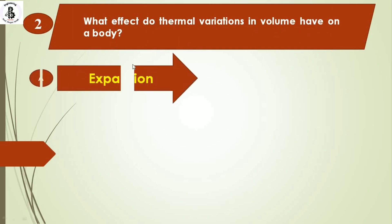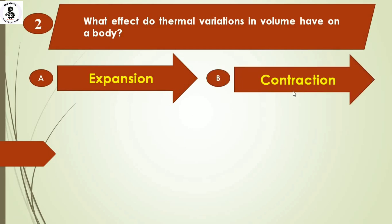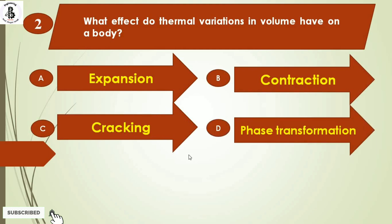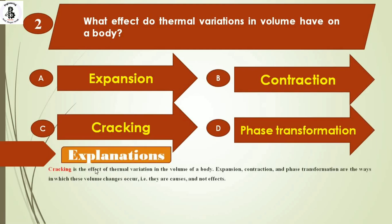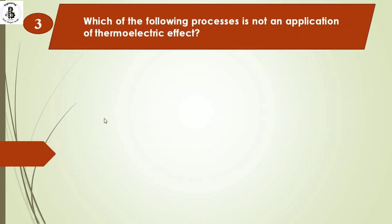The next question: what effect do thermal variations in volume have on a body? Option A) expansion, option B) contraction, option C) cracking, option D) phase transformation. Cracking is the effect of thermal variations in volume of a body, whereas expansion, contraction, and phase transformations are the ways in which these volume changes occur — they are causes, not effects. The right answer is option C.